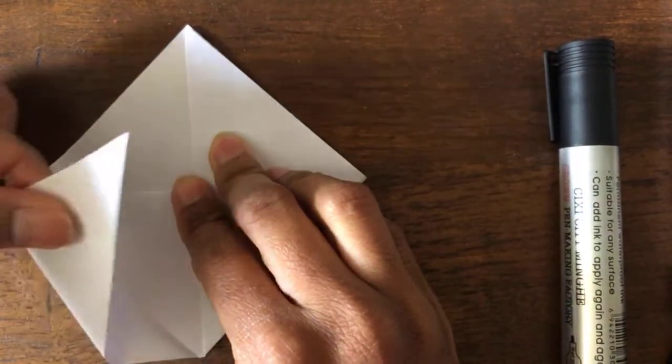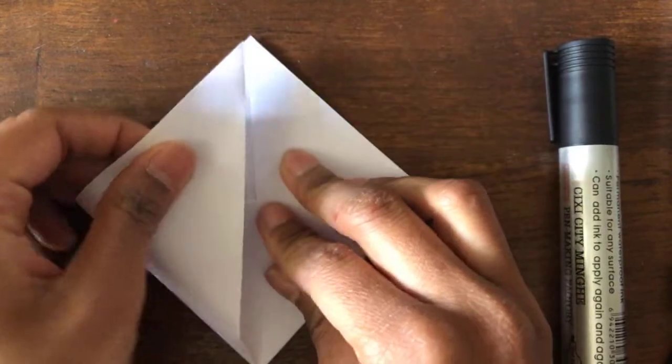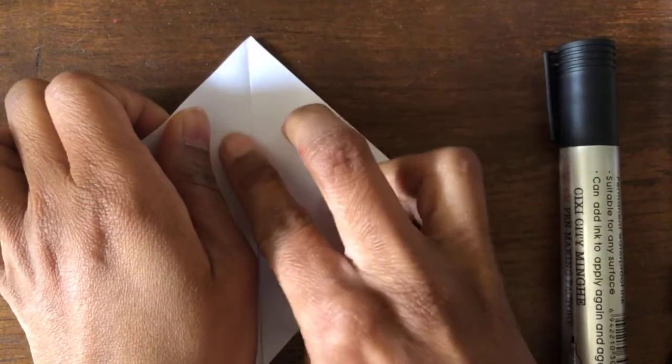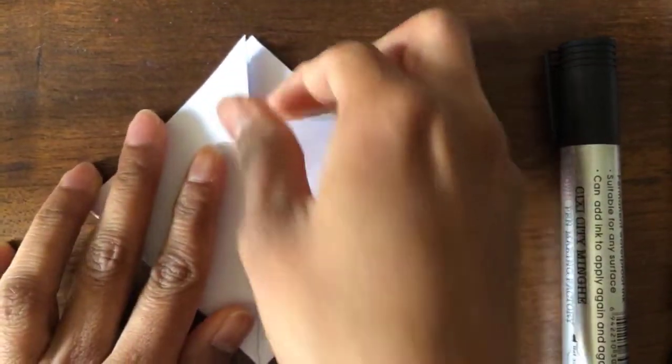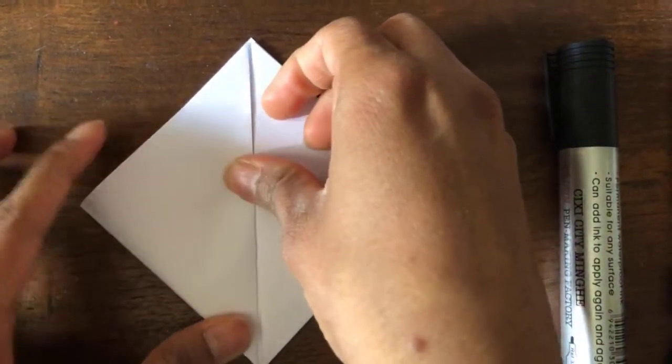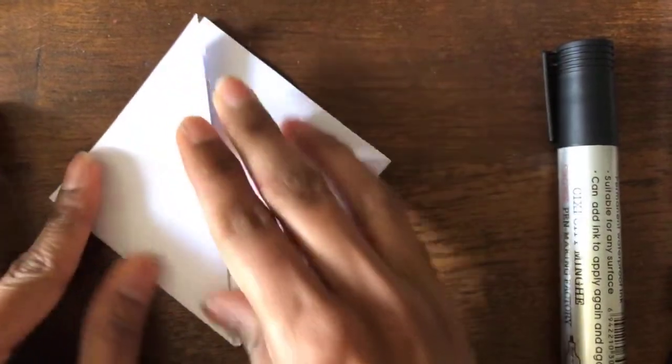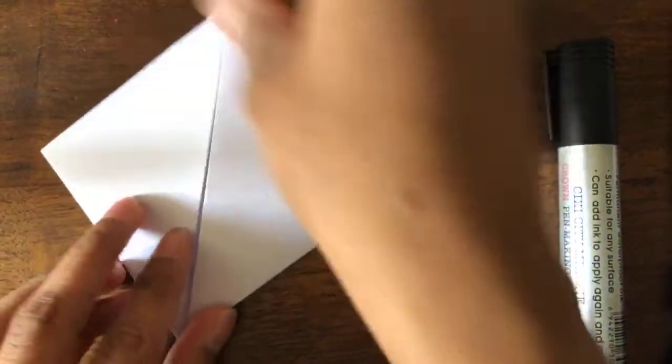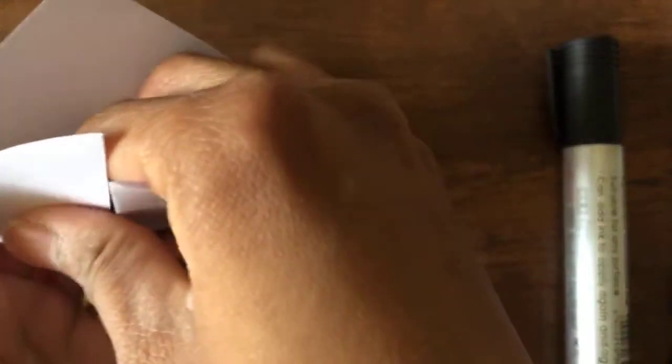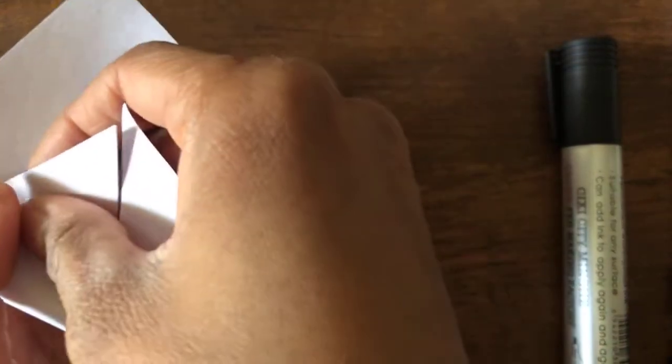And then you will take this side also and you will do the same. This origami is a Japanese art form. You can make a lot of animals and also other figures.